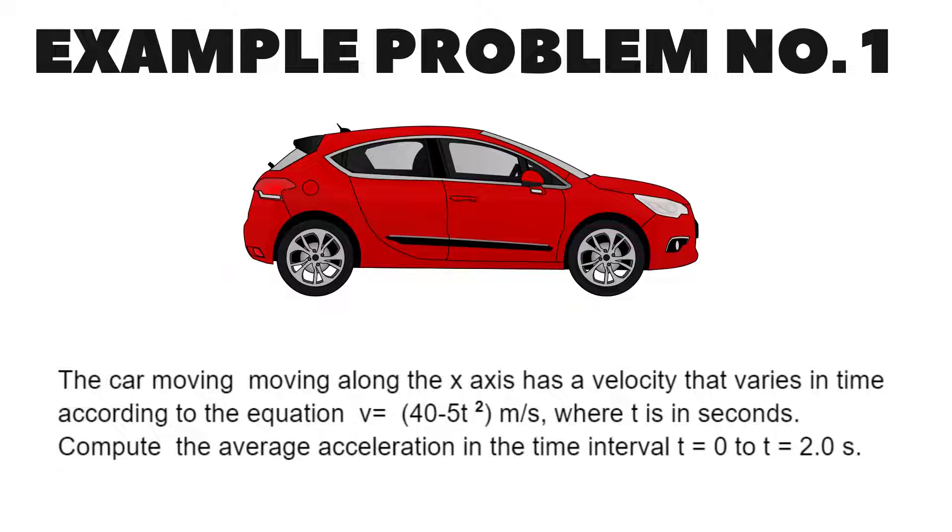Example problem number one. A car moving along the x-axis has a velocity that varies in time according to the equation v is equal to 40 minus 5t squared meter per second where t is in seconds. Compute the average acceleration in the time interval t is equal to zero and t is equal to 2.0 seconds.